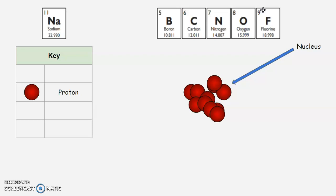We're going to look at the element sodium. Sodium would have 11 protons, so 11 circles in the middle.